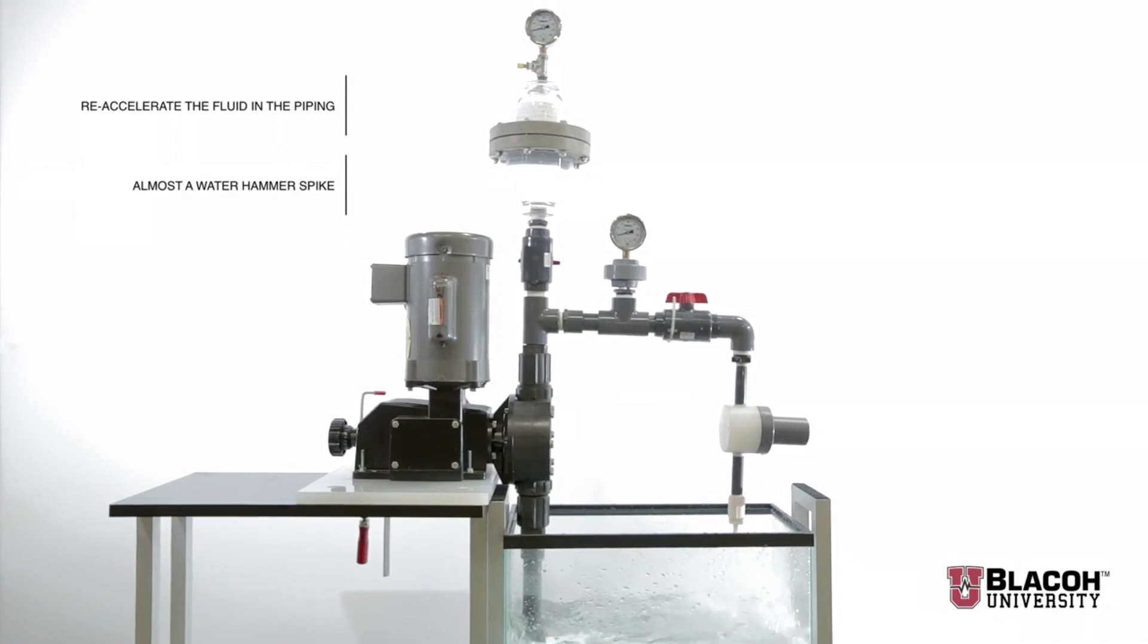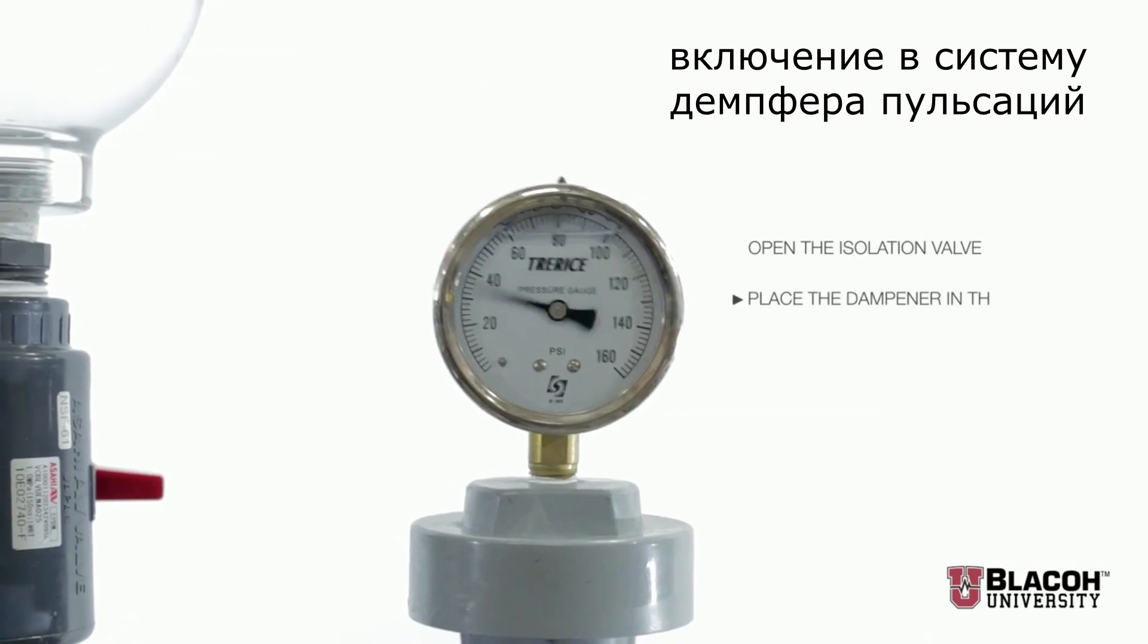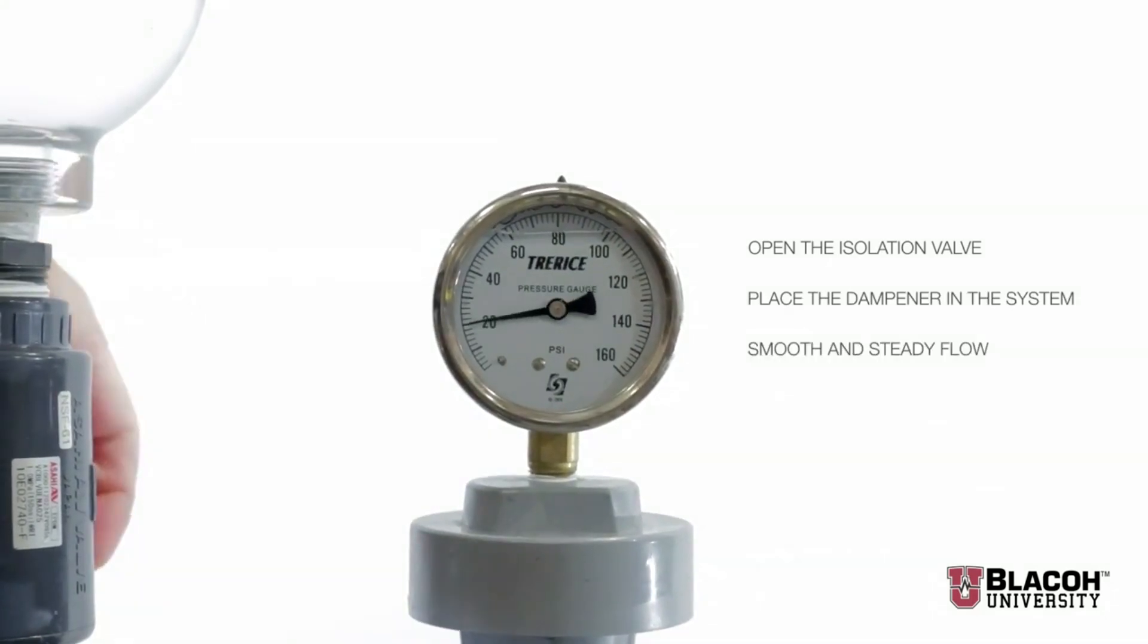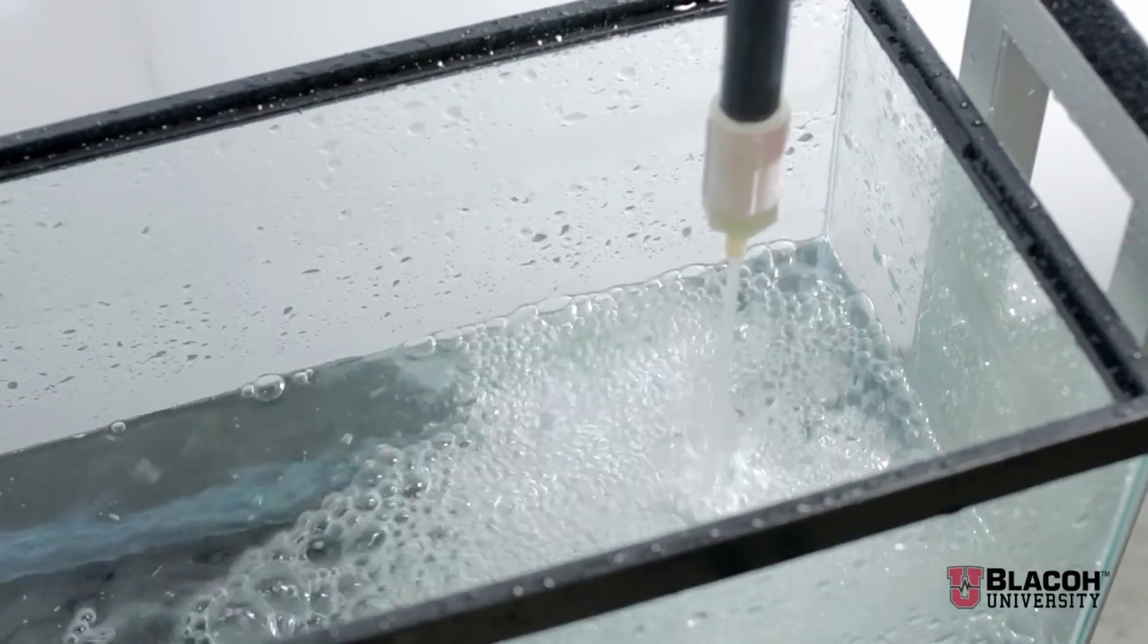As we open the isolation valve and place the dampener in the system, we see a smooth flow. We can see the gauge is now at 20 psi.